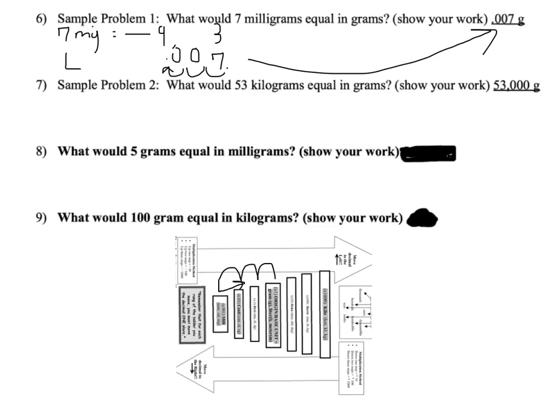The next sample problem, we want to know what 53 kilograms would equal in grams. We need to figure out which way to move the decimal. So we're starting up at kilograms, and we're moving down the ladder to grams. If we move down the ladder, we're going to move the decimal to the right.